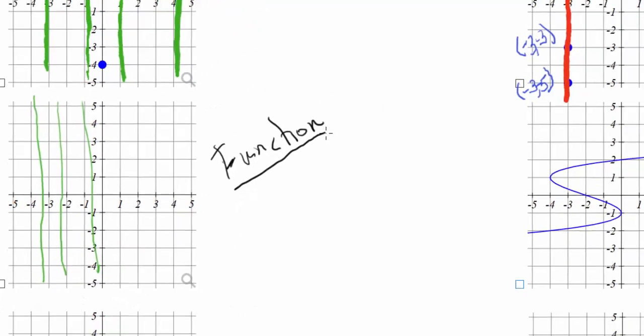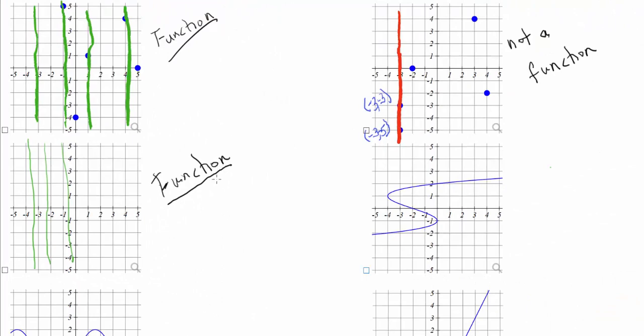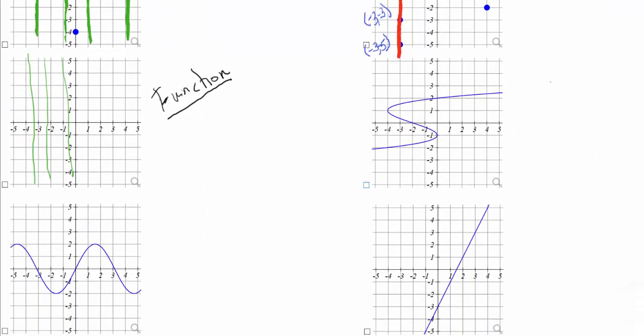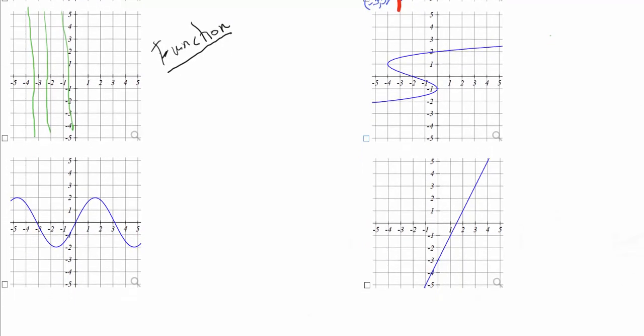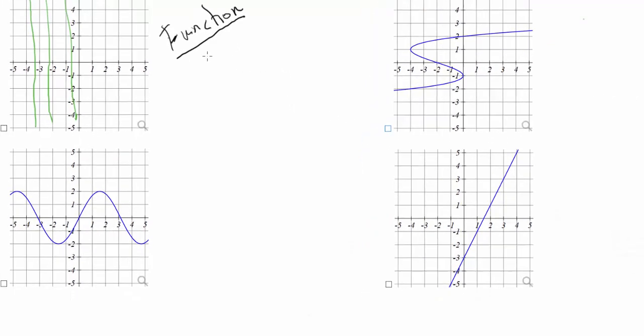So our next three examples are graphs that are more than just isolated points, but the same idea works. If every vertical line that you can draw crosses the graph at one point or fewer, then your graph does represent a function.